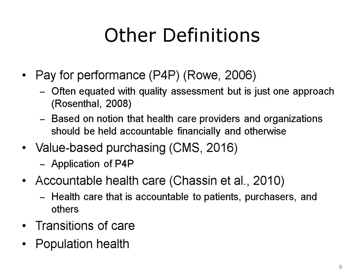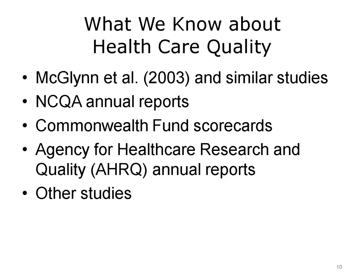Yet with the health care that employers provide to their employees, there's very little in the way of seeking value. Part of the motivation for the health care quality movement is to change that. Another term gaining favor is accountable health care, which means that health care providers and organizations must be accountable to patients, purchasers of health care, and others. This also involves demonstrating positive patient outcomes across transitions of care, which refers to the movement patients make between health care practitioners and various settings as their condition and care needs change during a chronic or acute illness.